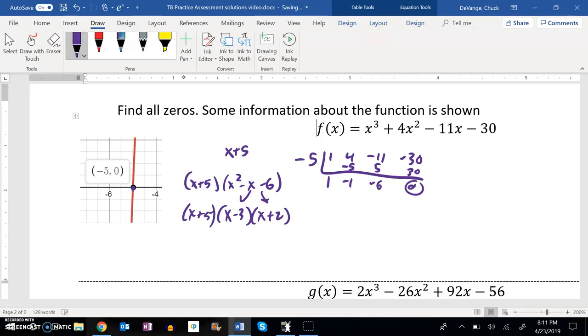And there's my zeros right there. I have one at -5, one at -2, and one at 3. There they are.